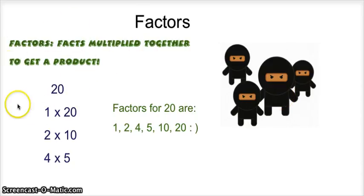So, factors, here's the definition. Factors are facts multiplied together to get a product, such as factors of 20. 1 times 20 equals 20, 2 times 10 equals 20, and 5 times 4 equals 20. That's what I'm talking about.